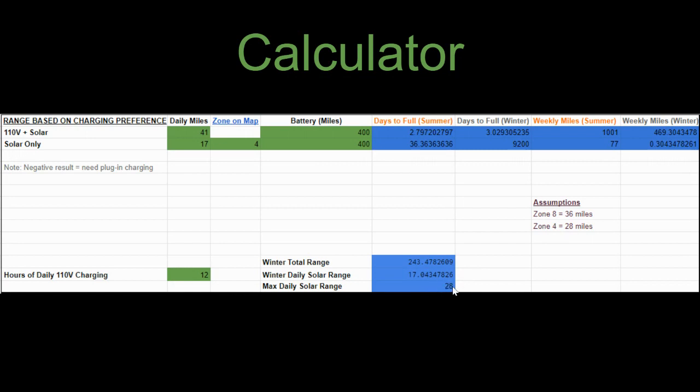Those numbers end up showing up here when you enter your zone. You'll see sort of the amount of solar charging that you can expect to get per day in the depths of winter on the coldest days and on the shortest days. And then the battery range loss that you can expect to get based on what zone you're living in because that will determine how cold it is where you live more than likely.